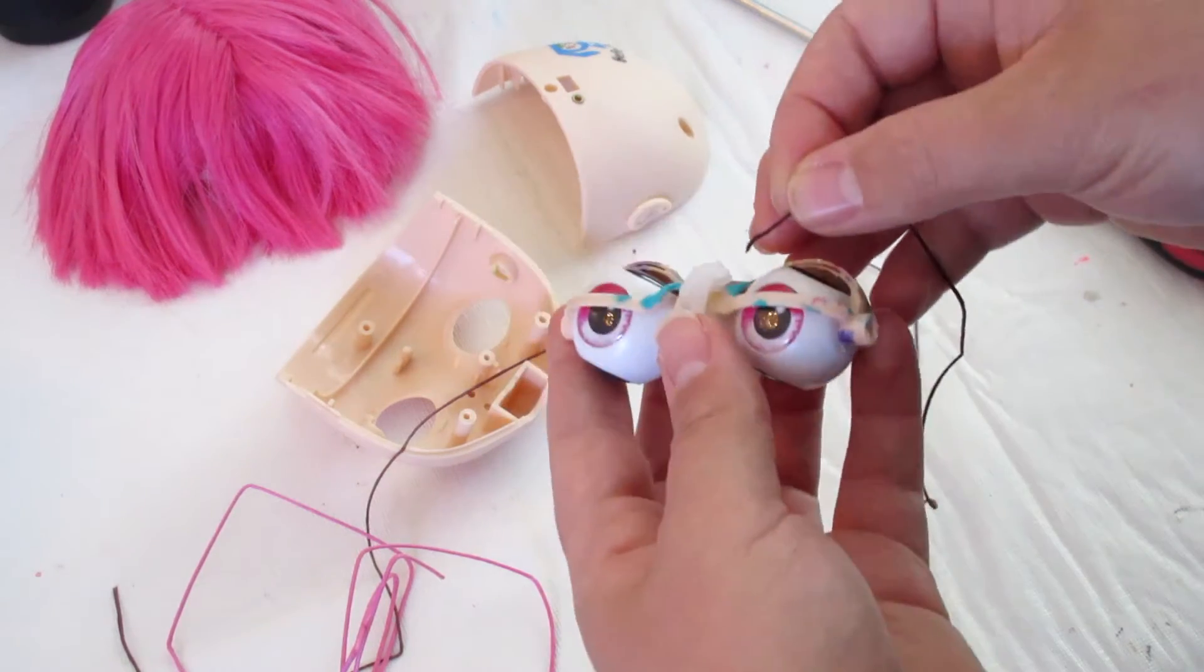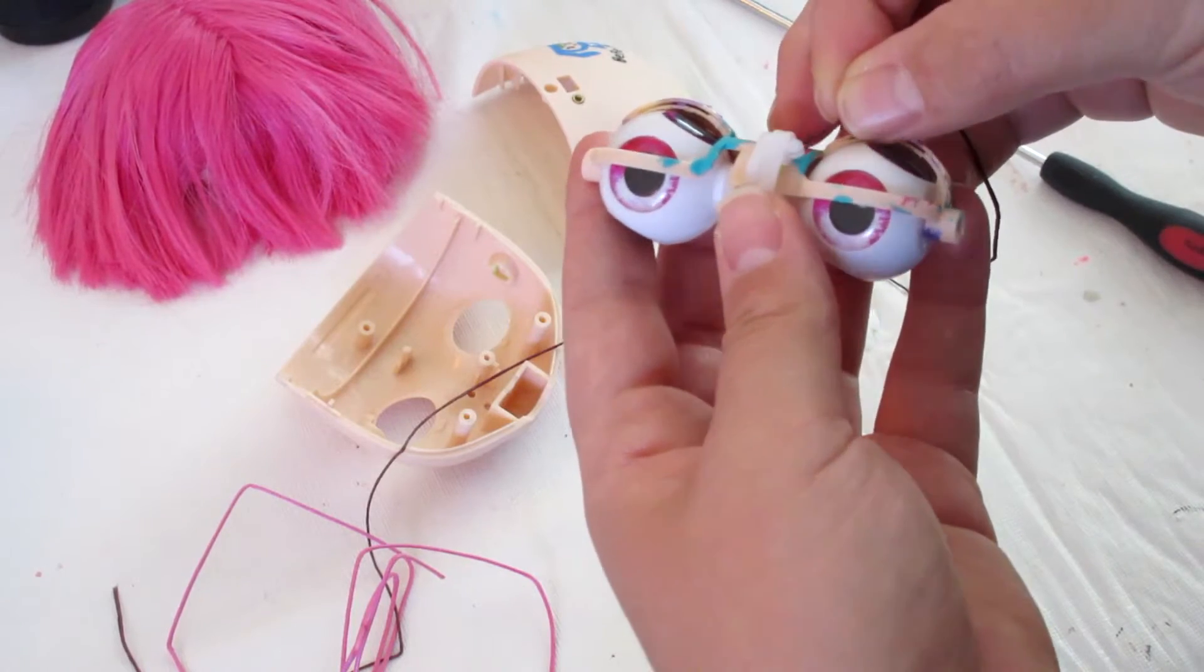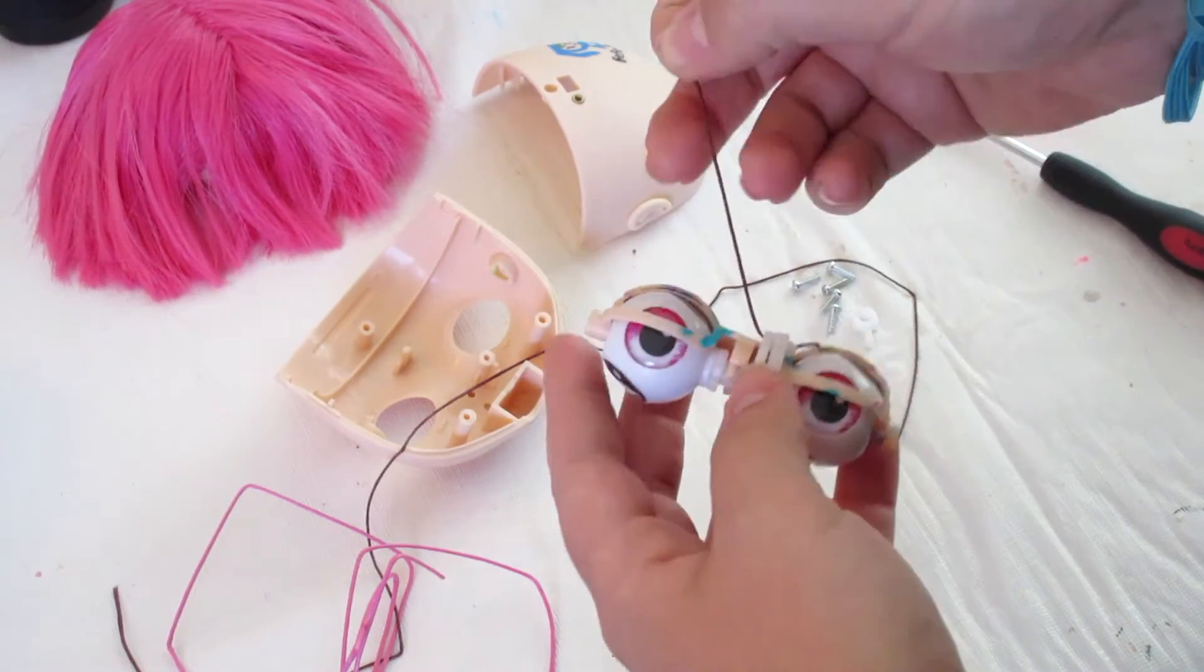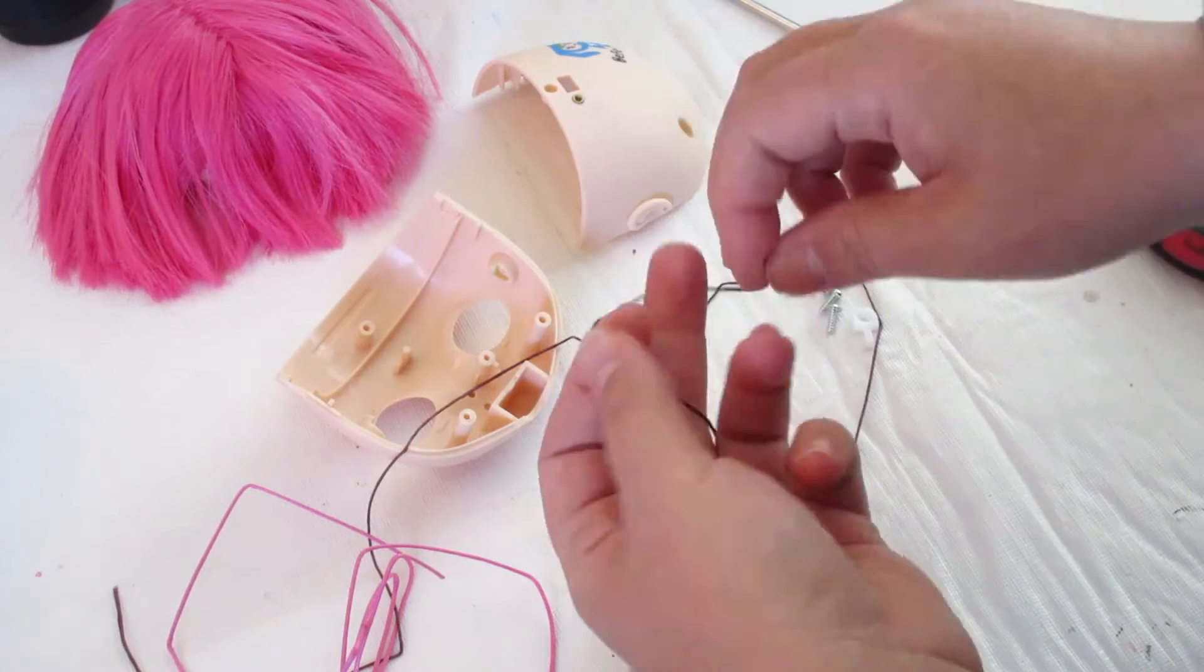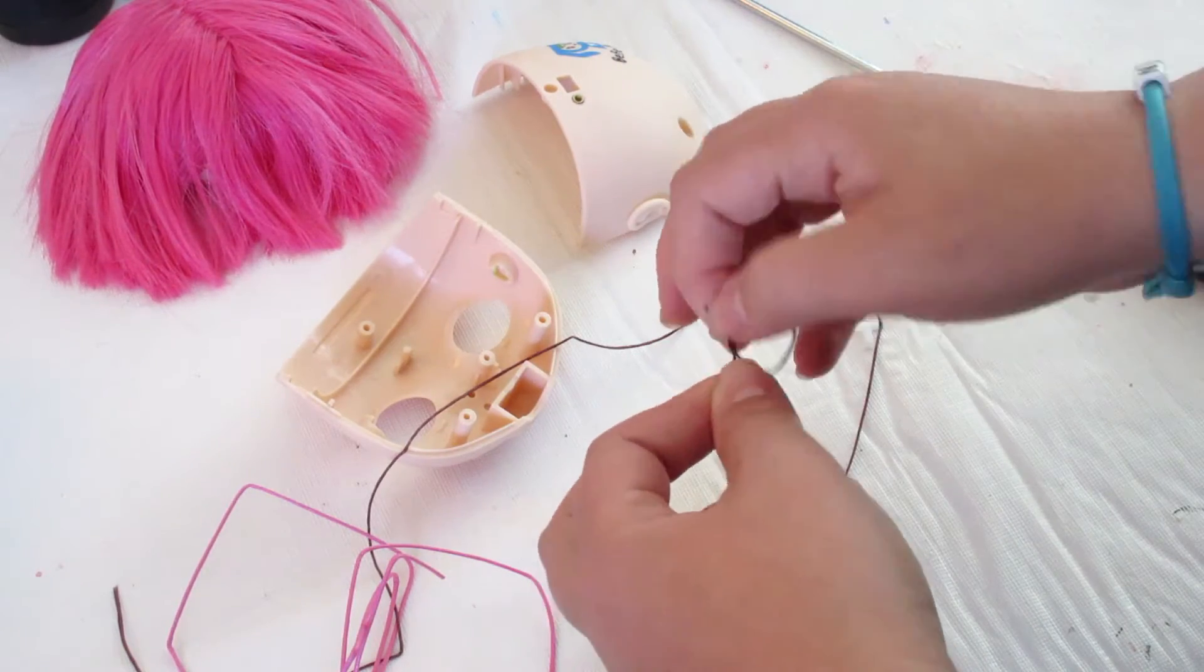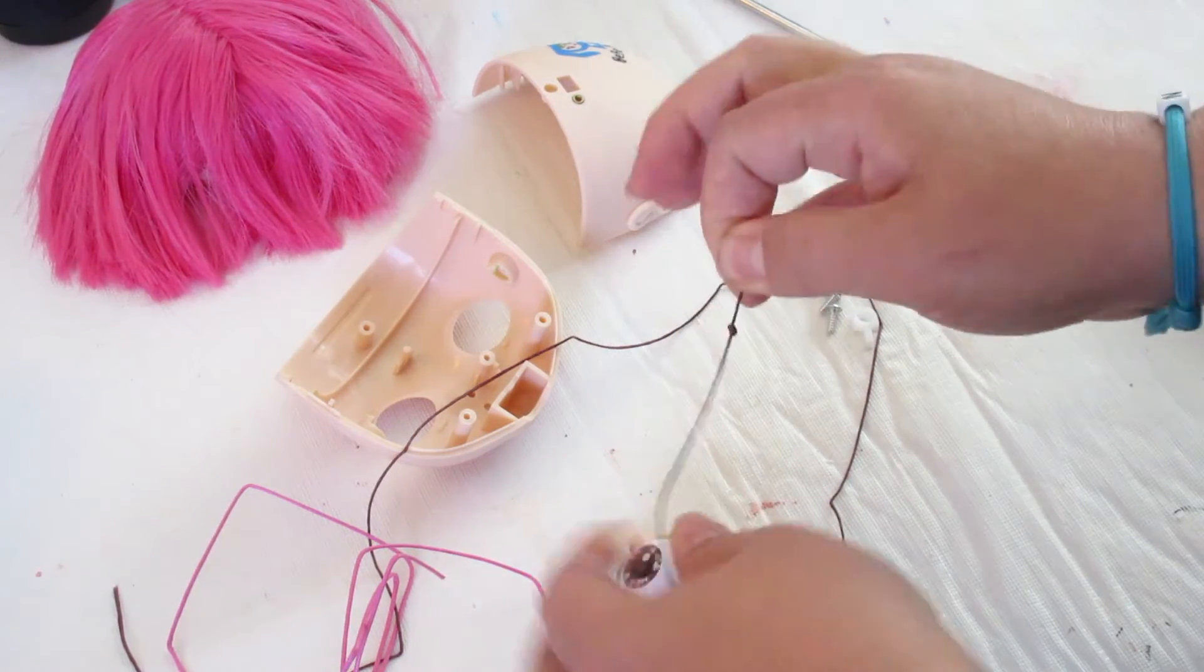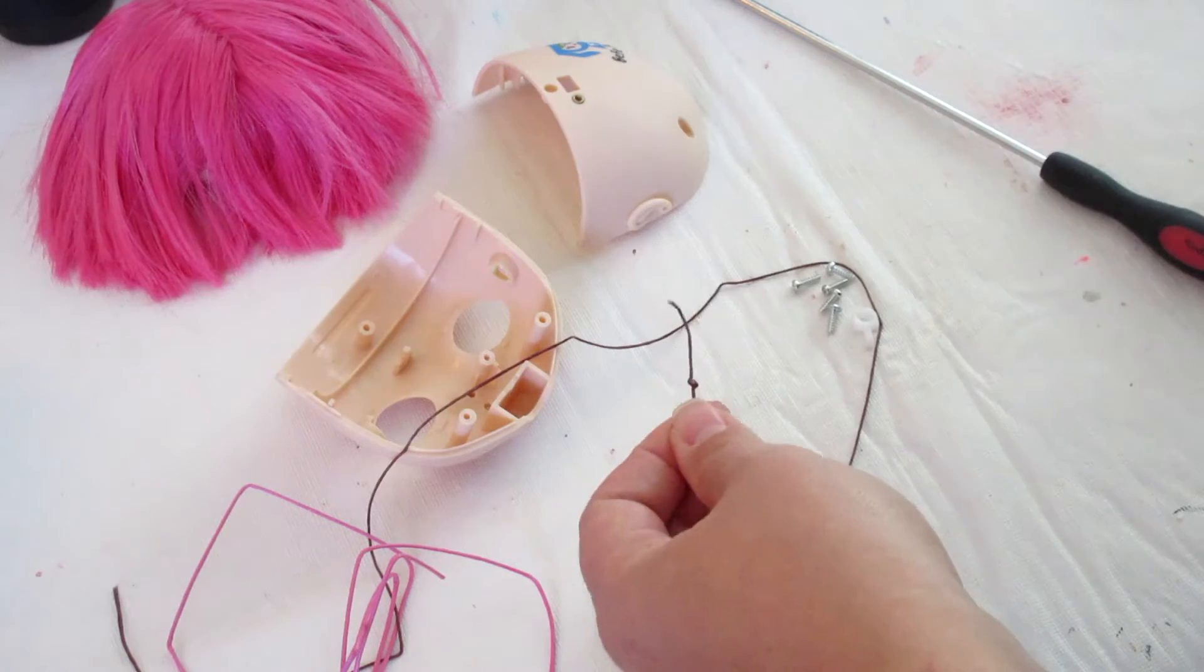You're going to thread it through this side and it will come out on that side, and you're going to tie a knot, a good knot, maybe a couple times, and then I always trim it off.